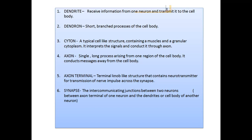Now the question is what is the synapse. Synapses are the intercommunicating junctions between two neurons. Whenever two neurons are placed end to end and a gap is found between them, this gap is known as the synapse. The synapse is the intercommunicating junction between the axon terminal of one neuron and the dendrites or cell body of another neuron.